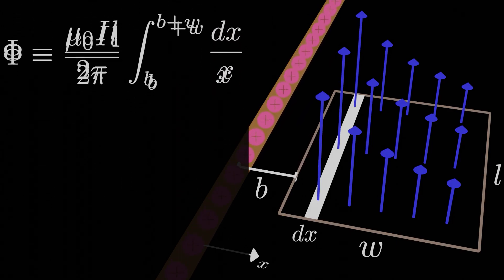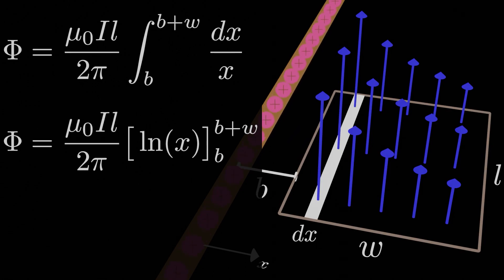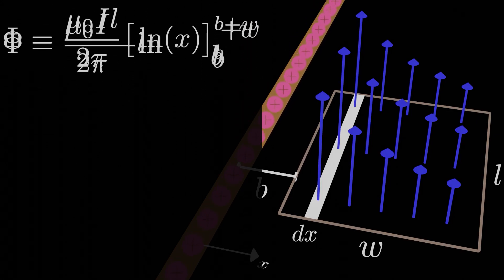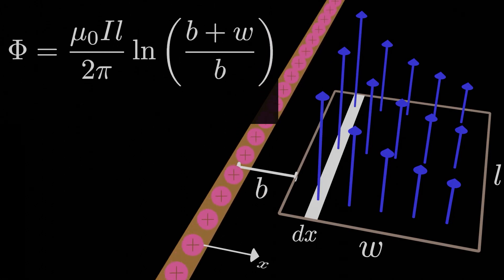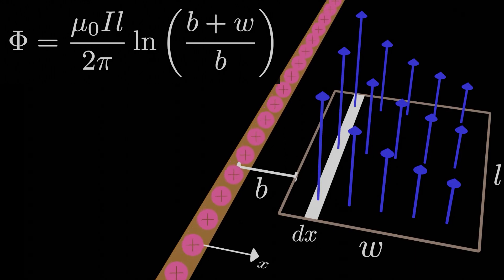The integral of dx over x is just the natural logarithm of x, and simply evaluating that logarithm at our bounds gets us the answer. Remember that the difference of two logarithms is the logarithm of their inputs divided by one another. We have mu-naught i L over 2 pi all times the natural log of b plus w all over b. This is the total magnetic flux that passes through this loop.